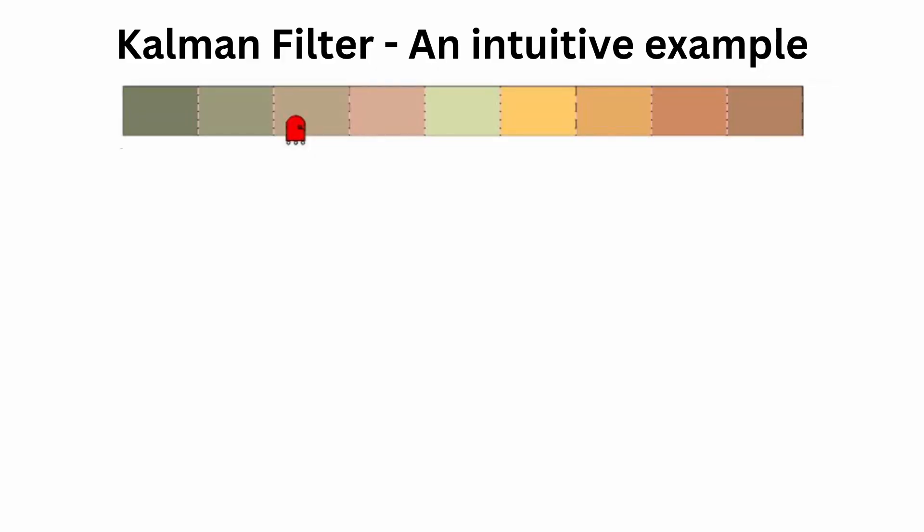Let's look at an intuitive example, because this entire series is built on top of intuitive examples instead of just throwing jargon and mathematical equations at you. Before we formally introduce the Kalman filter in its probabilistic form, let's see a visual example of a discrete Kalman filter at work. We're using a discrete Kalman filter just for visual simplicity — the real world is not discrete, but this example drives the message home.